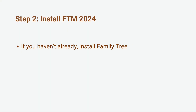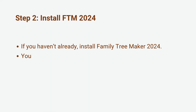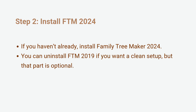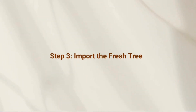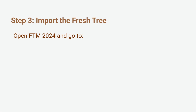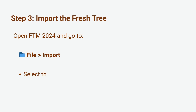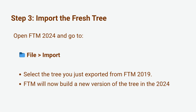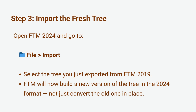Step two: install FTM 2024. If you haven't already, install Family Tree Maker 2024. You can uninstall FTM 2019 if you want a clean setup, but that part is optional. Step three: import the fresh tree. Open FTM 2024 and go to File > Import. Select the tree you just exported from FTM 2019. FTM will now build a new version of the tree in the 2024 format — not just convert the old one in place.